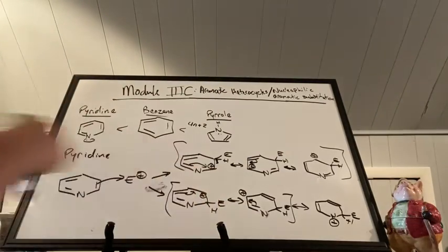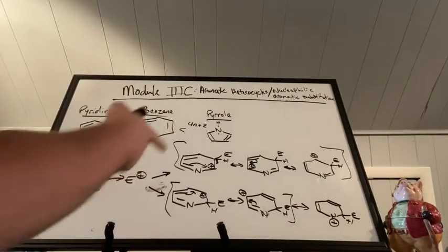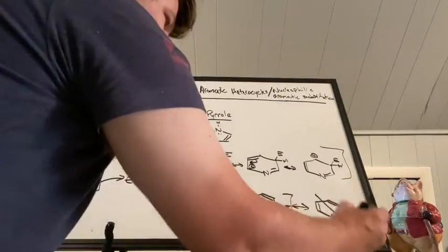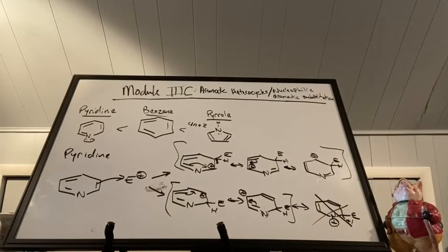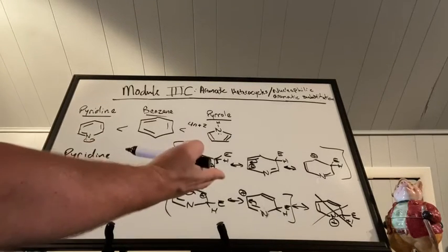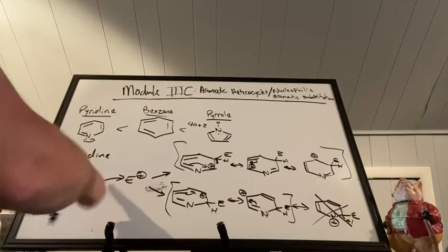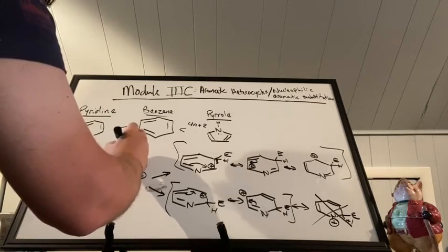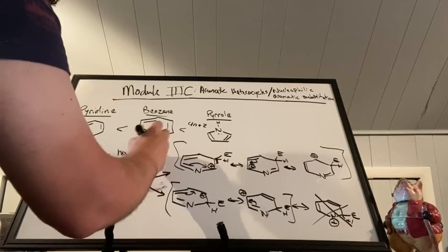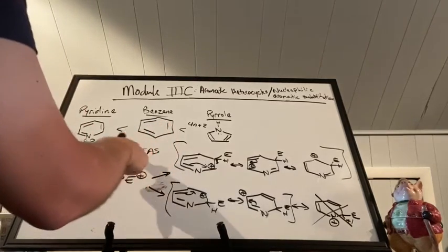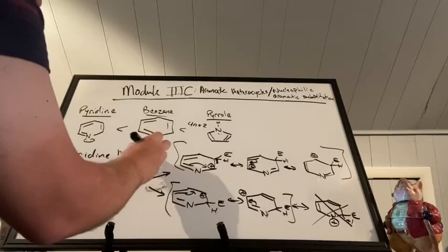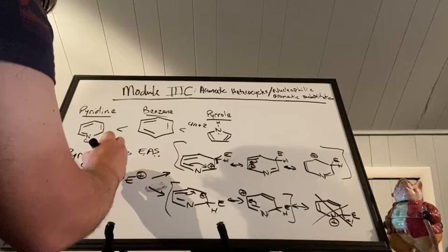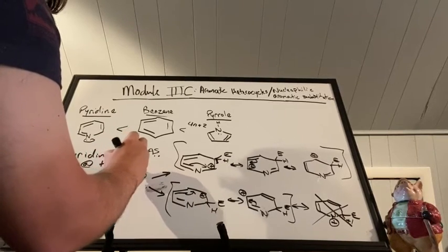Three forms beat out the two forms at the two position, so the three-position arenium ion is more stable overall. This explains why pyridine generally undergoes electrophilic aromatic substitution at the three position.